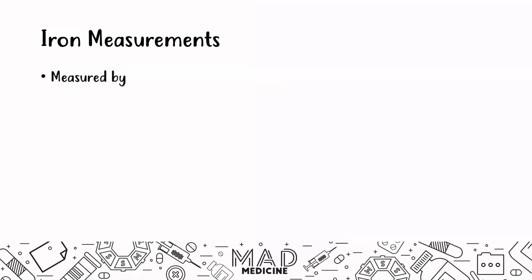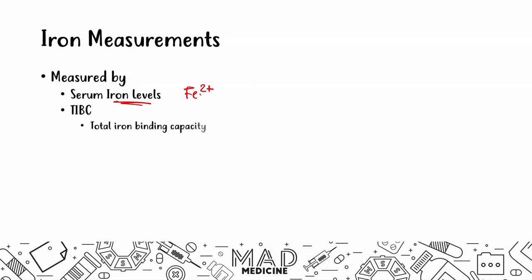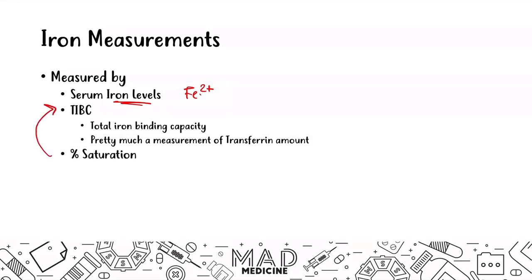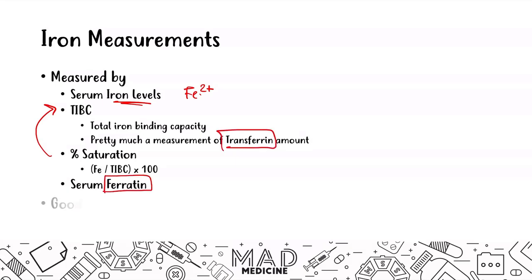Iron can be measured in blood using several values. Serum iron is the amount of Fe2+ in your serum. Total iron binding capacity (TIBC) is essentially a measurement of transferrin in your serum. Percent saturation tells you how much transferrin is bound to iron. Serum ferritin reflects intracellular iron stores. The two key proteins you're examining are transferrin and ferritin.